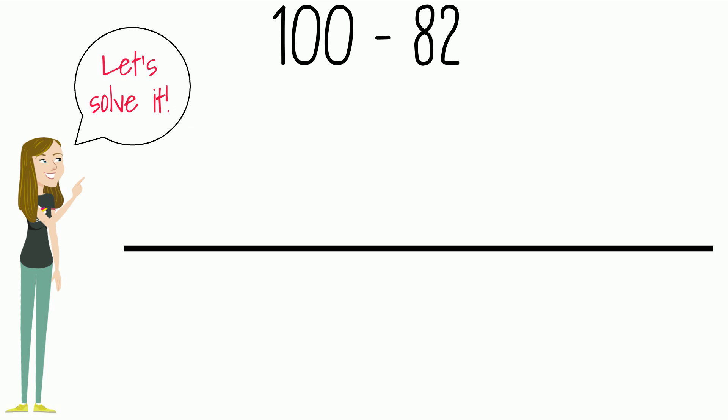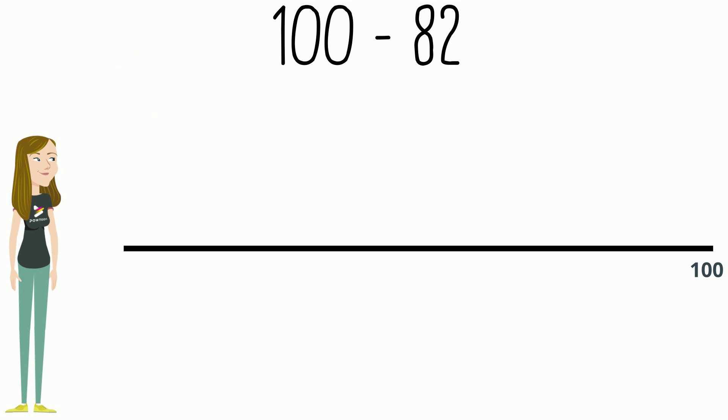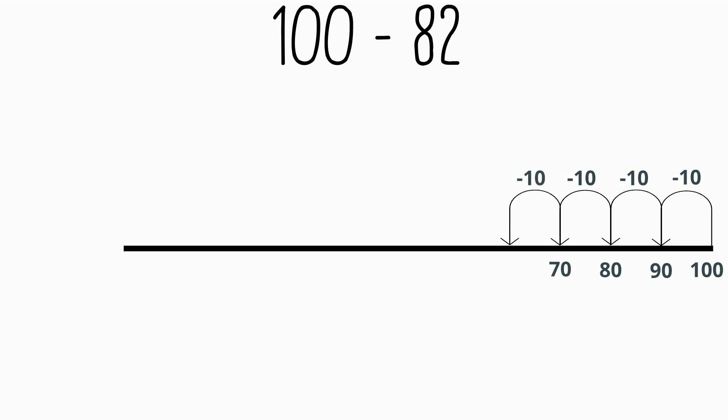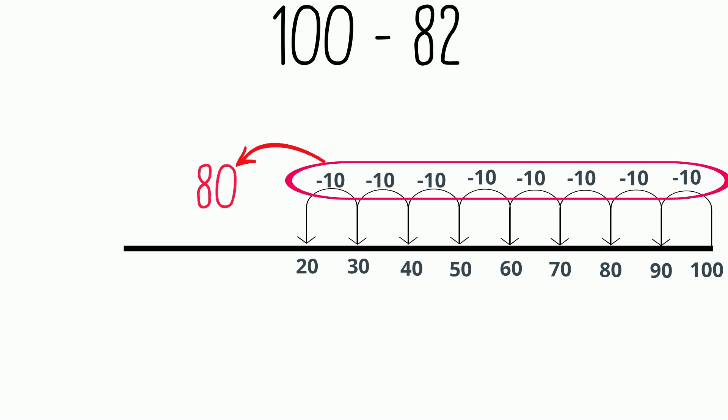100 take away 10 equals 90. 90 take away 10 equals 80. 80 take away 10 equals 70. 70 take away 10 equals 60. 60 take away 10 equals 50. 50 take away 10 equals 40. 40 take away 10 equals 30. 30 take away 10 equals 20. I see that so far we have subtracted 80. Let's count back two more to find our answer. Great! It is 18.